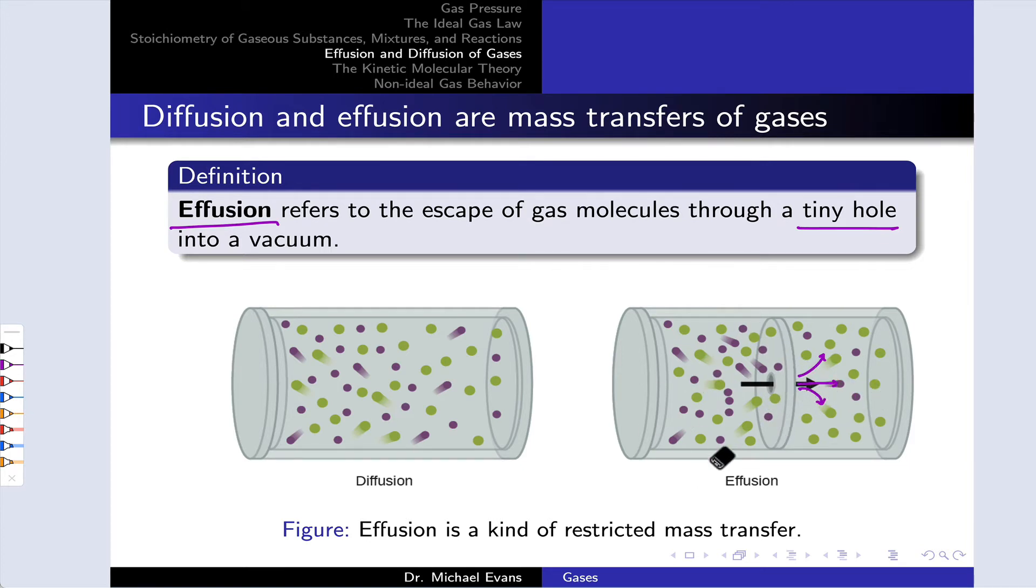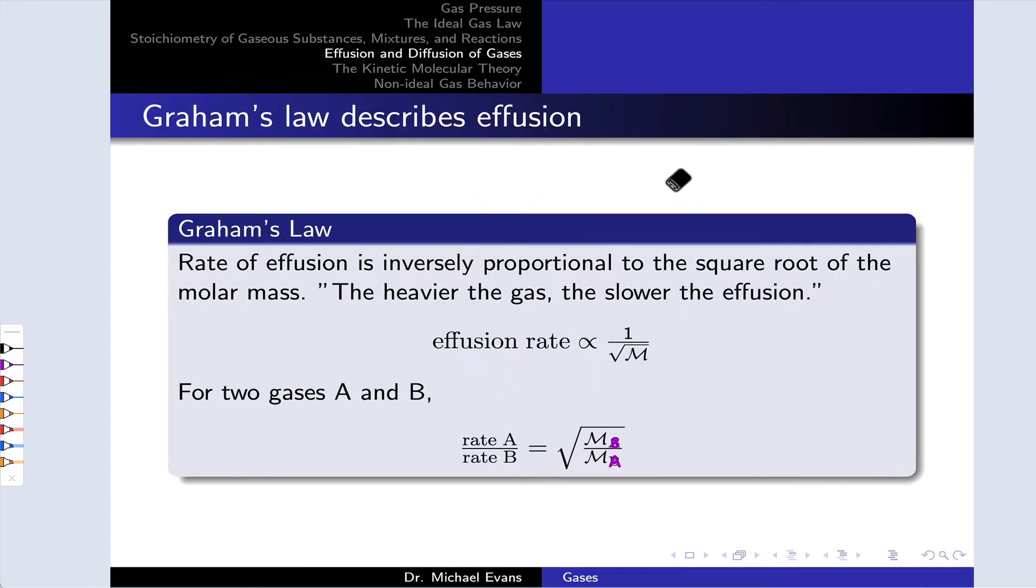They started out exclusively in the left-hand container. Moving through that tiny hole to the right-hand container is what we call effusion. It's kind of a restricted mass transfer through a tiny hole.